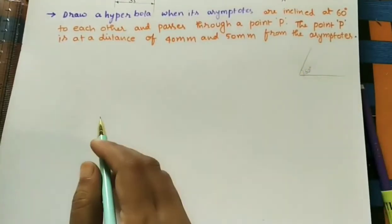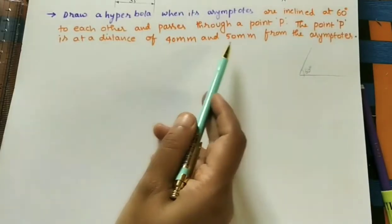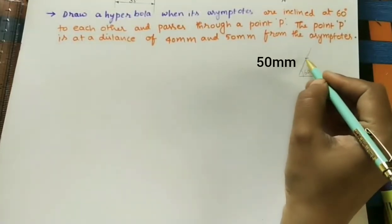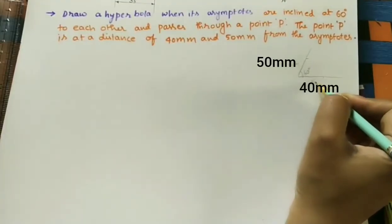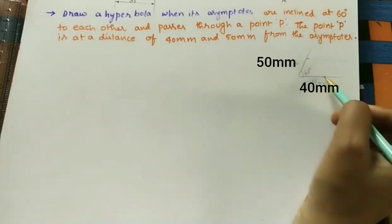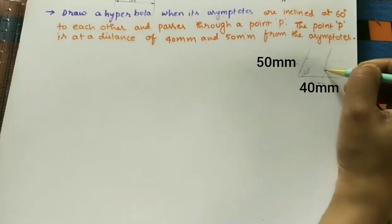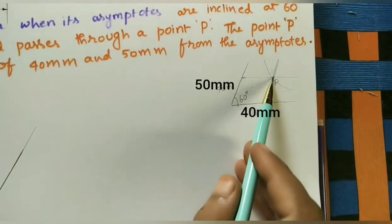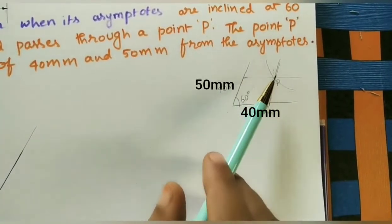We are taking one point P, which is at a distance of 40mm and 50mm from the asymptotes — 50mm from one and 40mm from the other. To mark this point, we draw a line parallel to each asymptote at those distances. The intersection point is the P point. After getting P, we draw the hyperbola passing through it.